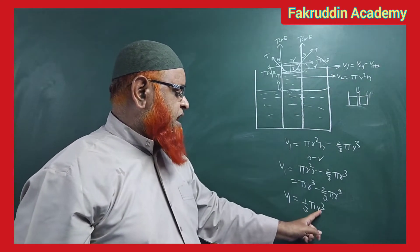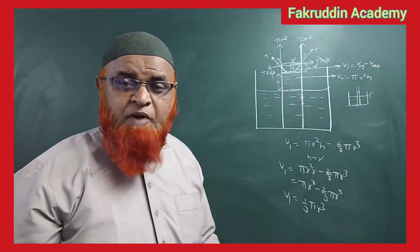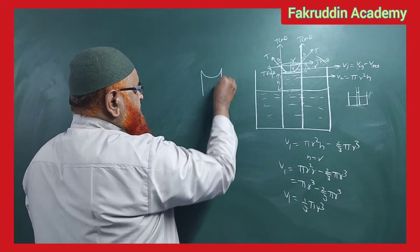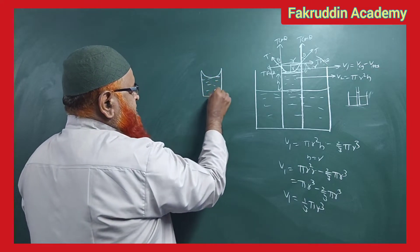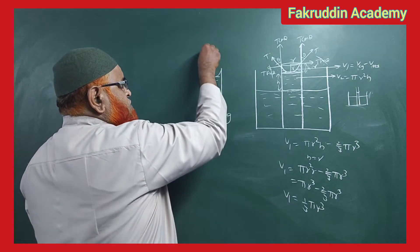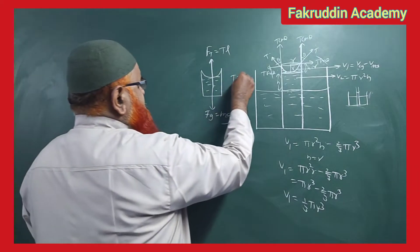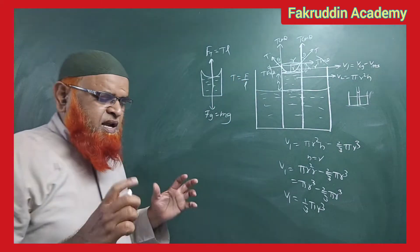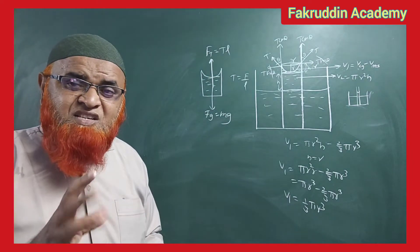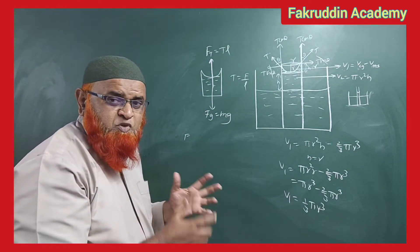So we know V1 = 1/3 pi r cubed, and we also know V2, the main cylindrical volume below the meniscus, is pi r squared h. Now let us take a free body diagram of the water inside the capillary. Two forces are acting: force due to gravity, which is mass times g acting downwards, and force due to surface tension, which is tension times length acting upwards. Tension is force per unit length, so force equals tension times length.